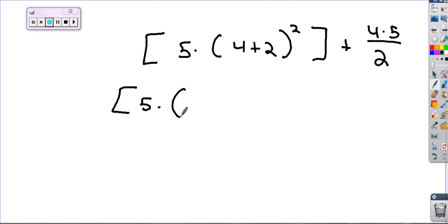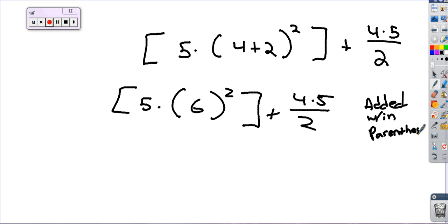You need to show your work. So 5 times (4 plus 2). What's your first step? I added within the parentheses. What's your second step? Six squared. Your second step would look like this: 5 times 36 plus 4 times 5 divided by 2. So what did you do? Your second step is I simplified the exponent.